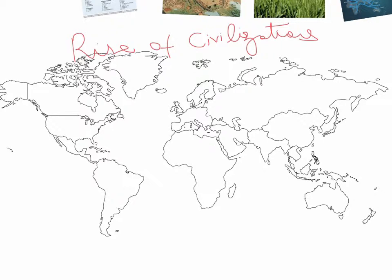About 100,000 years ago came a major cooling event that dramatically impacted the early humans. Rainfall patterns changed, the landscape was altered, and there was a huge shortage of food. Pressurized by all the changes going around, the early humans began a massive journey.